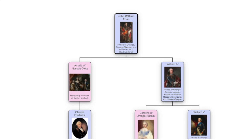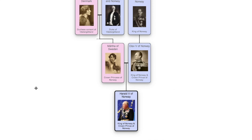Hello and welcome to the third episode of the Royal Descendants of John William Frisaux. In the last episode, we traced the ancestry of Queen Margaret II of Denmark all the way to John William Frisaux, the closest common ancestor of sovereigns of Europe. This is your host Joshua, and for today's episode, we will look at how King Harald V of Norway is related to John William Frisaux. Let's go right into it.